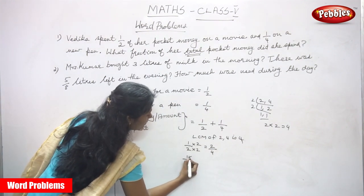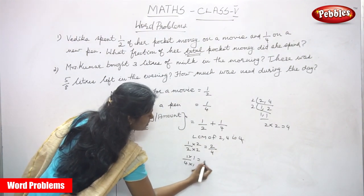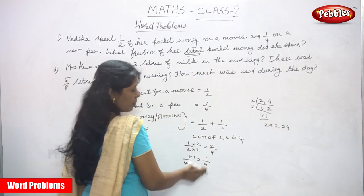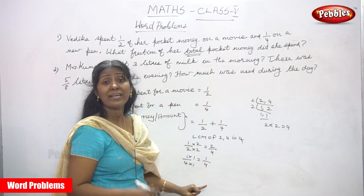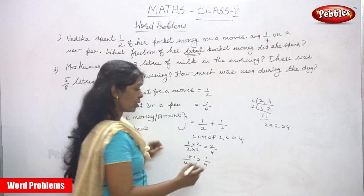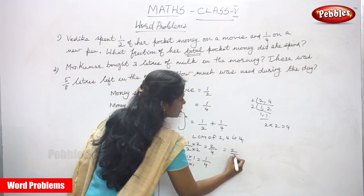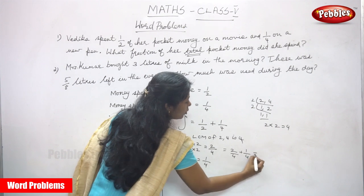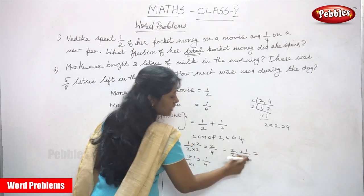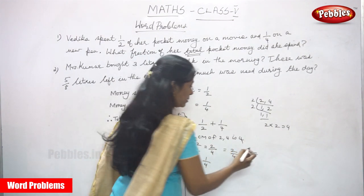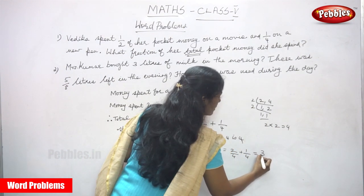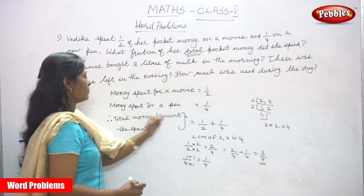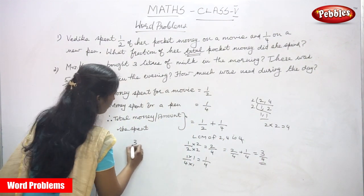For 1 by 4, multiply by 1 to get 1 by 4. Now both denominators are the same — 4. So we add the numerators: 2 by 4 plus 1 by 4 equals 3 by 4. The total amount she spent is 3 by 4.